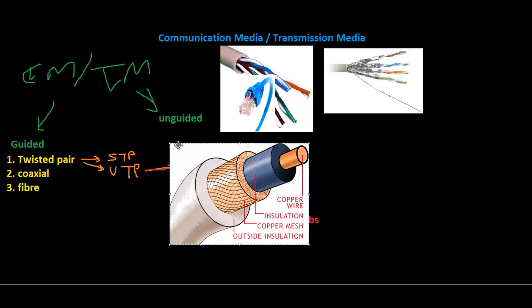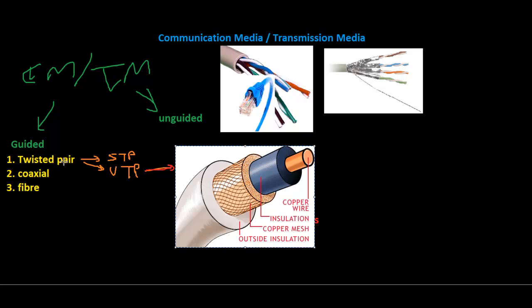Coaxial cable allows runs of distance up to 500 meters and can support up to 100 nodes on a network. It's very resistant to interference and is more expensive than twisted pair cables.